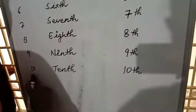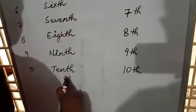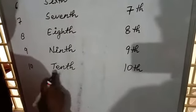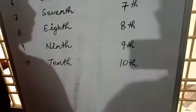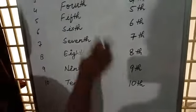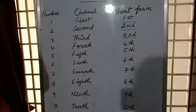And number 10, T-E-N-10, T-E-N-T-H tenth. 10th, TH tenth. The short forms of ordinals and their name. Okay?